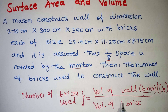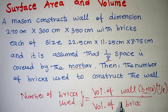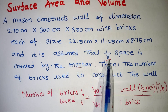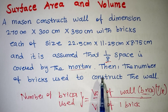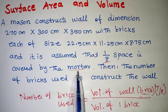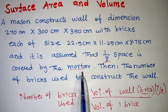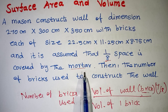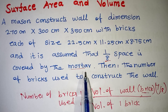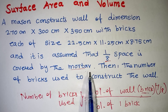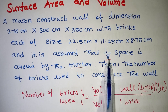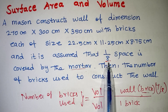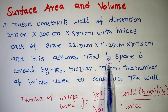Volume of the wall divided by volume of the brick gives the number of bricks. It is assumed that 1/8 of the space is covered by mortar — that is the cement. So out of the total wall space, 1/8 is taken by mortar. The remaining space, 7/8, is filled by bricks. So now, how many bricks did we use?